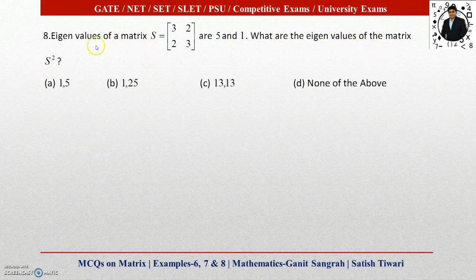So there is one way: you find S², then calculate the eigenvalue using the characteristic equation. Or there is a property of eigenvalue. That is, if matrix A has eigenvalues lambda 1 and lambda 2, then A² will have eigenvalues lambda 1² and lambda 2².